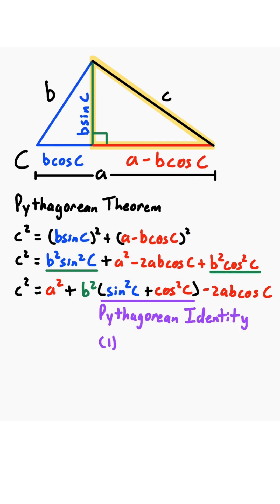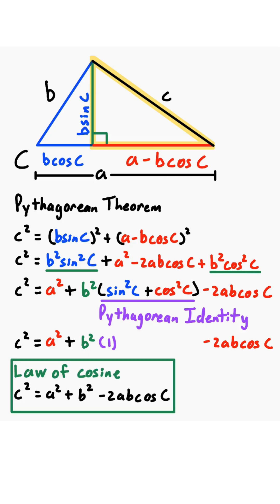which is equal to 1, then we'll substitute that in and we're left with C squared equals A squared plus B squared times 1 minus 2AB cosine of C. Well, B squared times 1 is just B squared, so we're left with C squared equals A squared plus B squared minus 2AB cosine of C, which is known as the Law of Cosines.